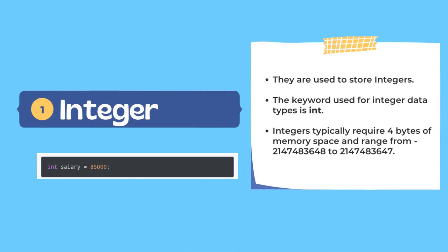Now let's discuss primary data types in brief. The first primary data type is integer. As the name suggests, it is used to store integer values. The keyword used to define an integer data type is int. It usually takes four bytes of memory space, though this depends on the system configuration. Memory space and ranges will be discussed in a separate video.